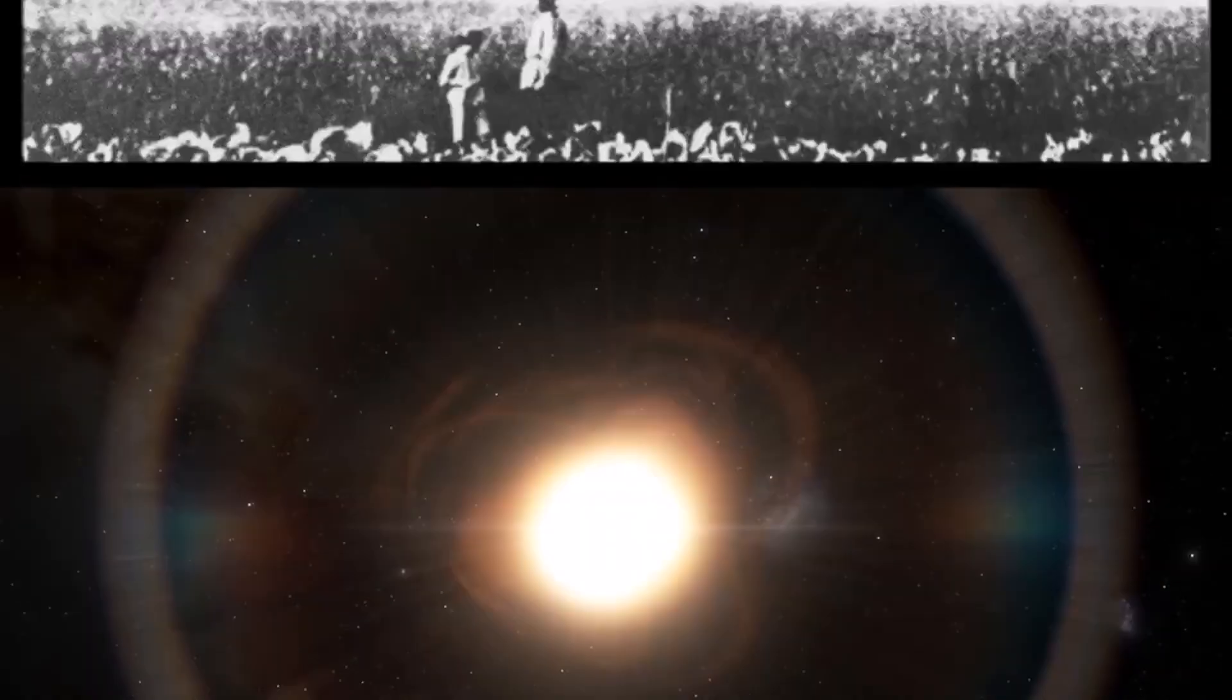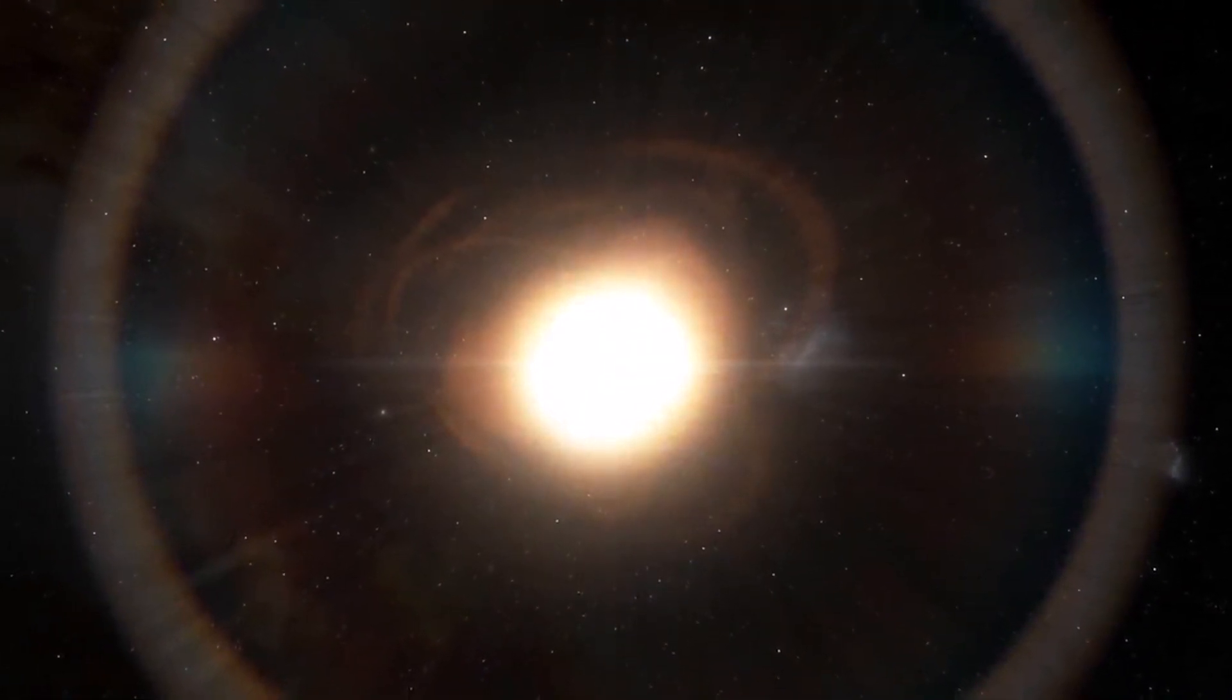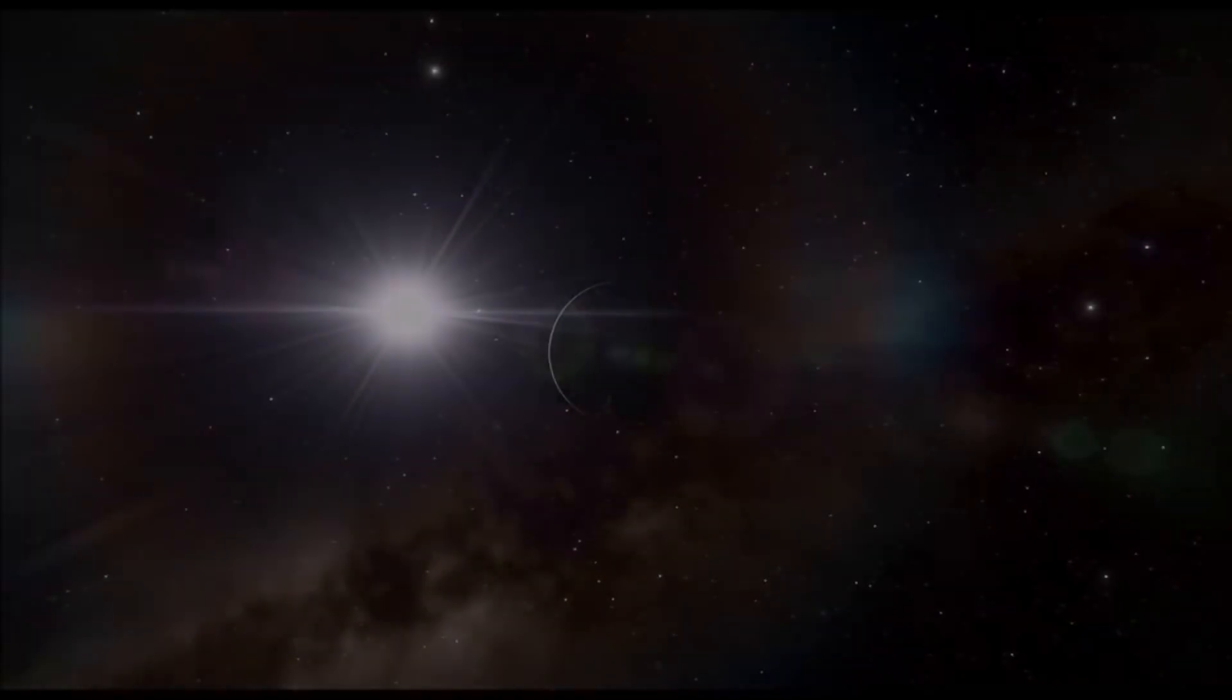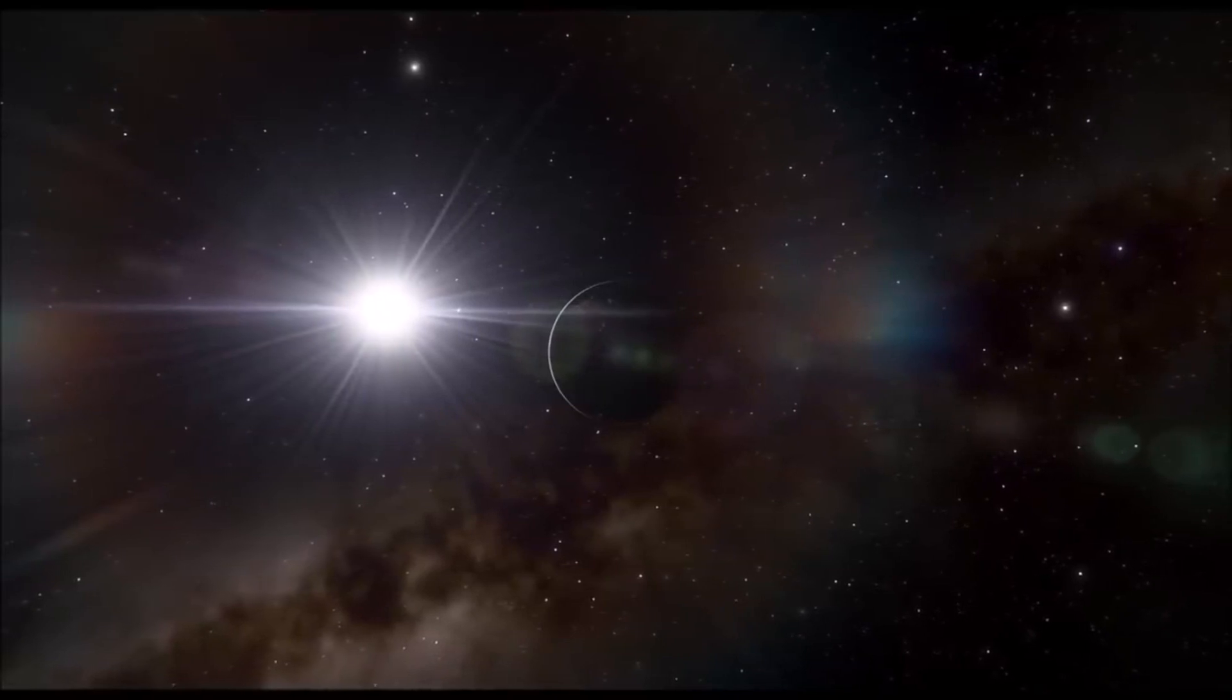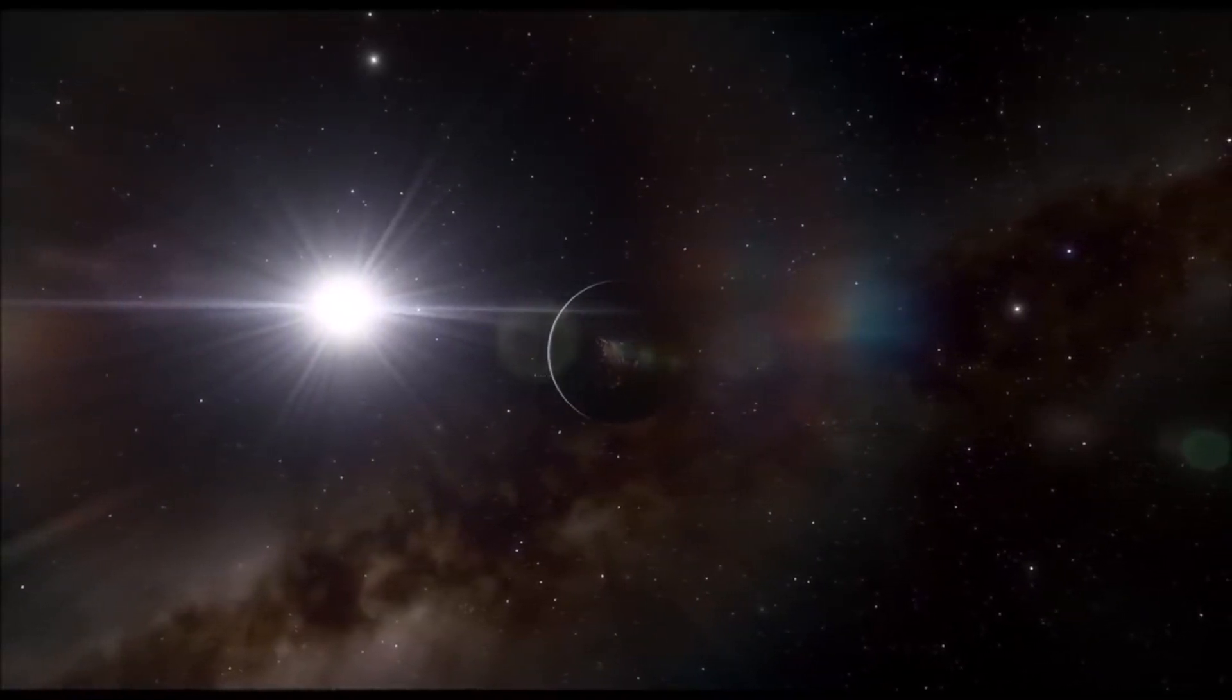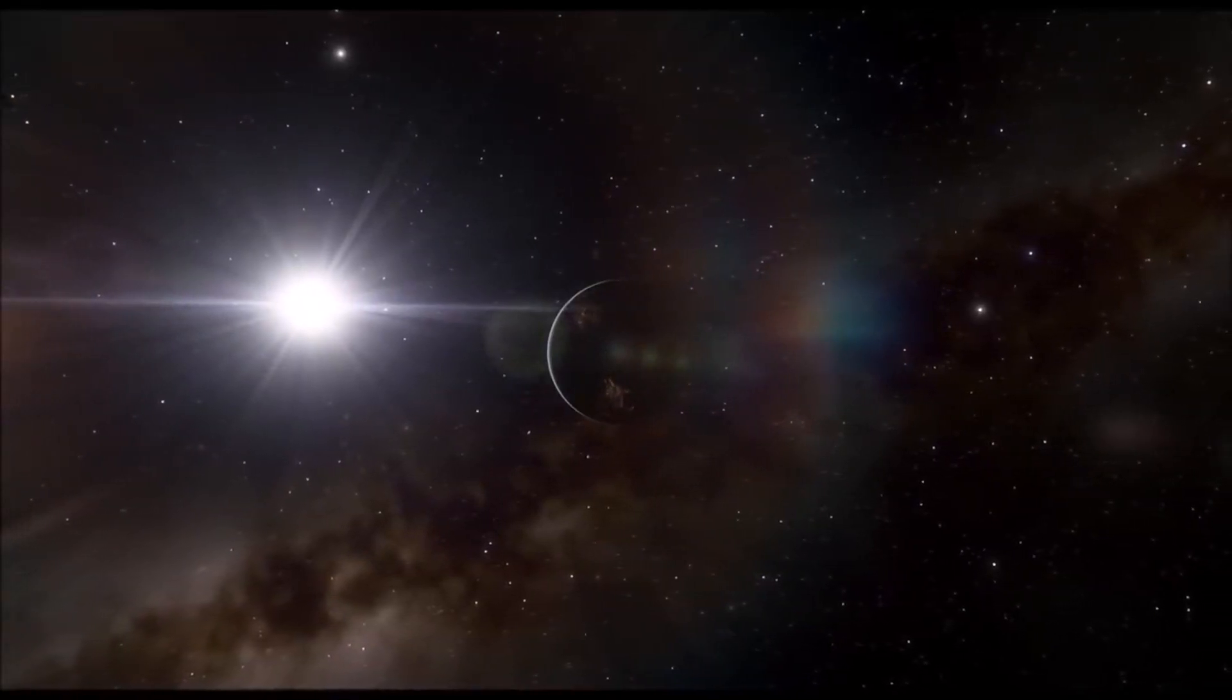If you were to put UY Scuti in the middle of our solar system, it would be seven astronomical units larger than the rest of the system, even if the orbit of Saturn was not included. This star could swallow five planets, the asteroid belt, and 82 moons. We can't be sure of UY Scuti's mass, but we do know that it is ejecting mass as its life nears its end.